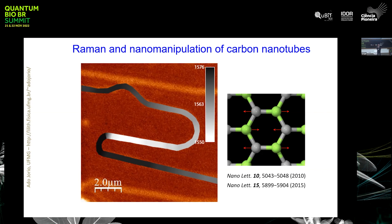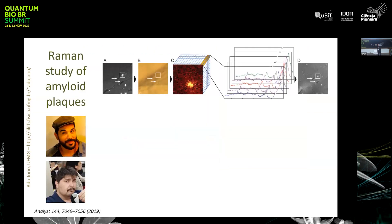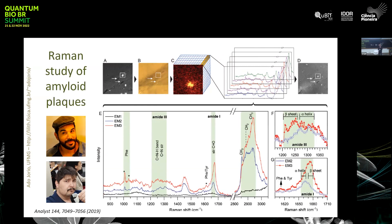That was a simple case — one specific frequency of one small object you can move. When you go to biology, you have a more complex structure. These researchers take a piece of brain, locate beta-amyloid plaques related to Alzheimer's development, and perform hyperspectral analysis: for each position you take one Raman spectrum, giving you an entire set of Raman spectra for each position.